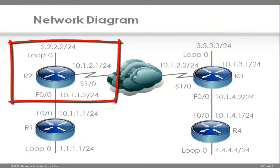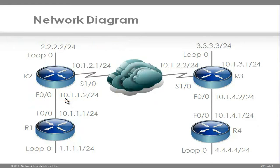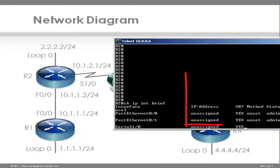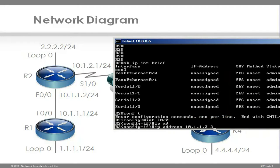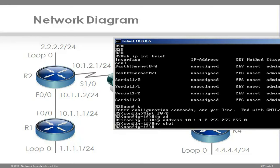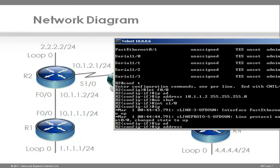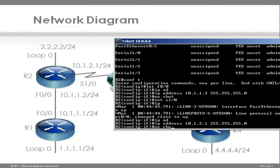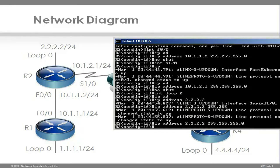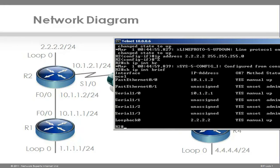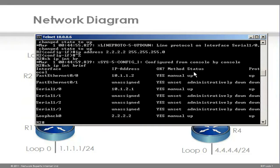We're going to do something similar on router 2. Router 2 has three interfaces: Fast Ethernet 0/0, Serial 1/0, and a loopback interface. Show IP interface brief shows there are no IP addresses on the interfaces. So on the first Fast Ethernet interface, let's give it an IP address as per the diagram and no-shut the interface. Do the same on the serial interface — IP address 10.1.2.1 — and no-shut it. Create the loopback interface. Show IP interface brief — you can see my three interfaces are configured and up/up.